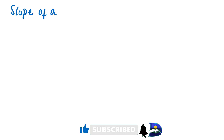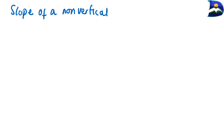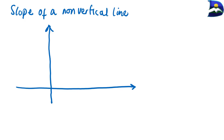You might be wondering about the slope of a line. The line we're going to be looking at is not a vertical line but a non-vertical line. In this graph, we have our y-axis and our x-axis, and we have a line drawn in a particular direction — a pretty nice straight line.